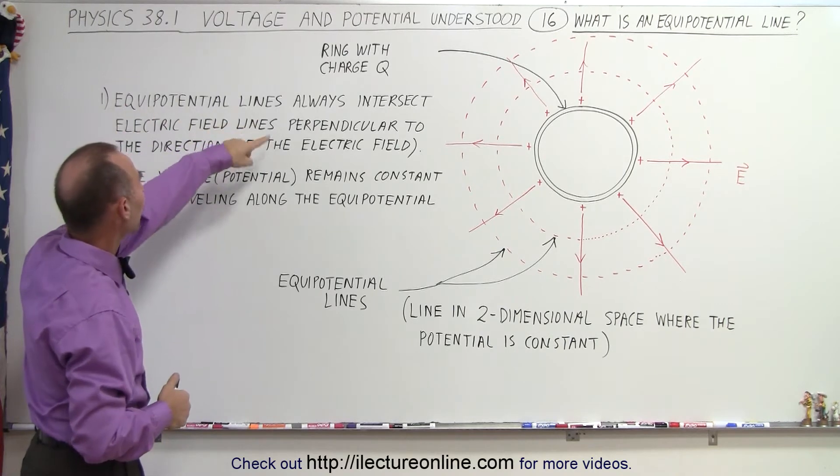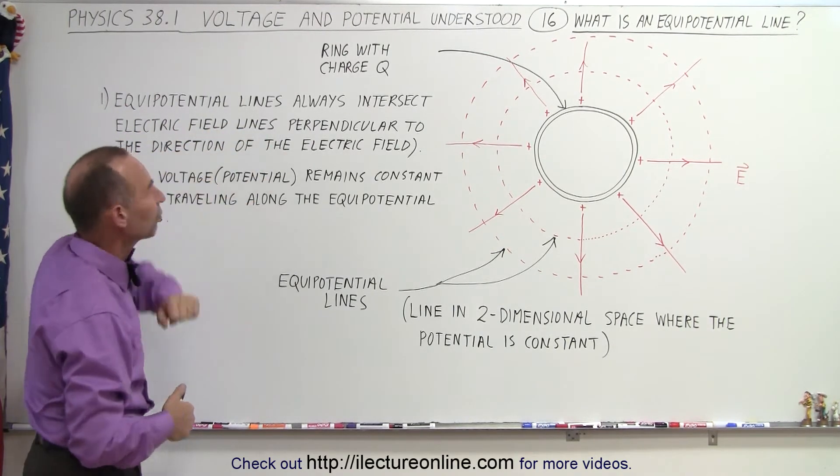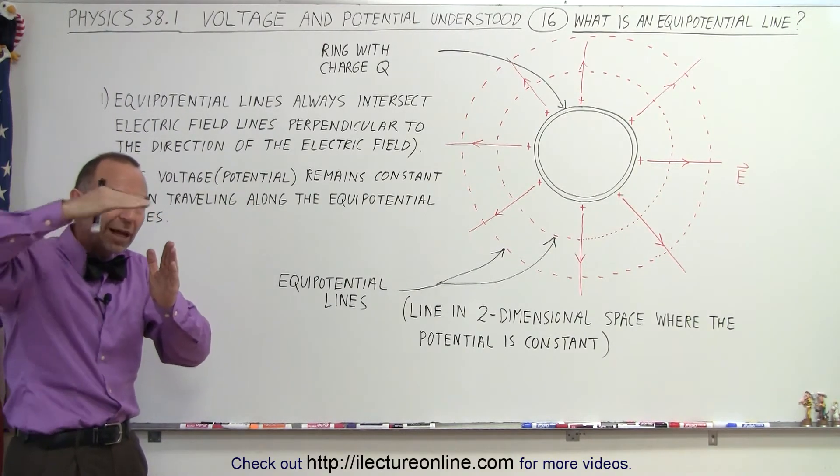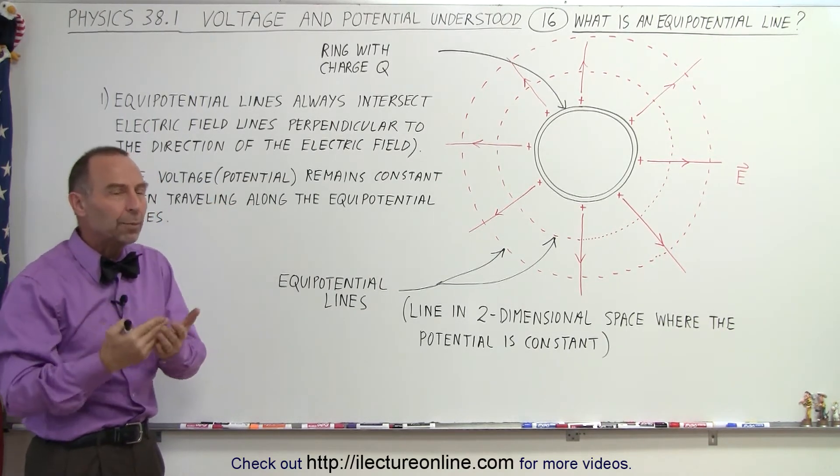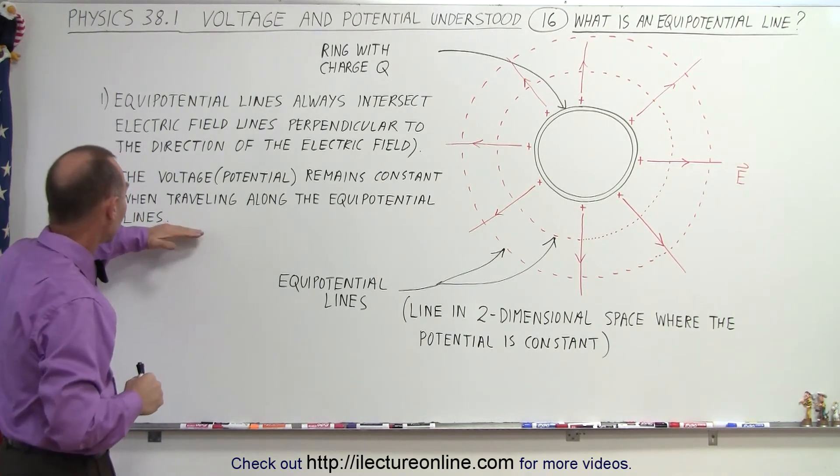First of all, the equipotential lines always intersect electric field lines perpendicular to the direction of the electric field. That's really important. So no matter how the electric field is drawn, whatever line you draw perpendicular to the field lines will always be an equipotential line, meaning the voltage doesn't change along the line, which is what the second point says.